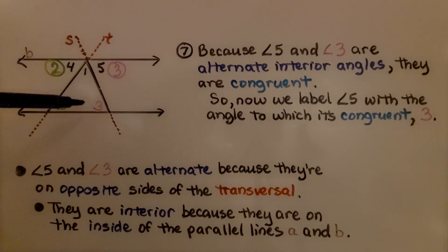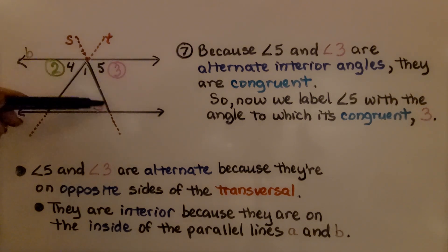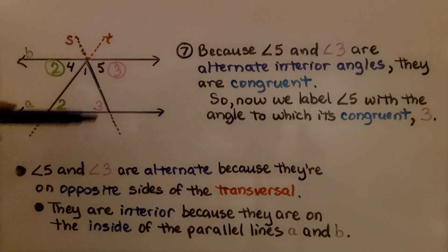Now, angle 5 and angle 3 are alternate because they're on opposite sides of this transversal, and they're interior because they're inside these parallel lines A and B. That's the exact same thing for 4 and 2.